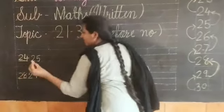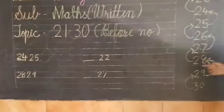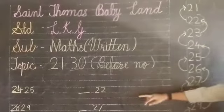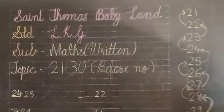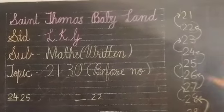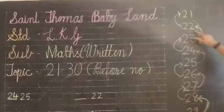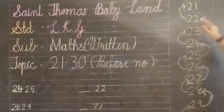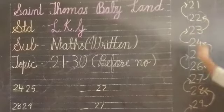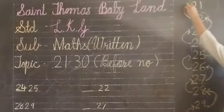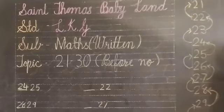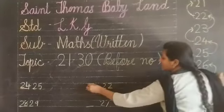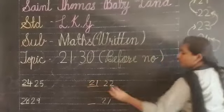And next which number is this? 22. 22. And where is 22 children? Here is 22. So 22 before, 22 before, 21. So our answer is 21.